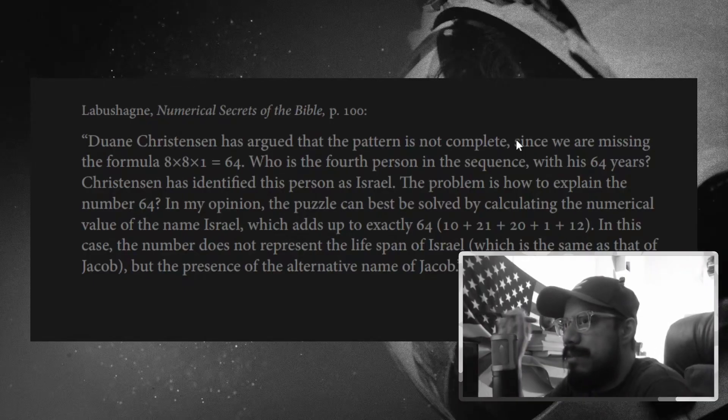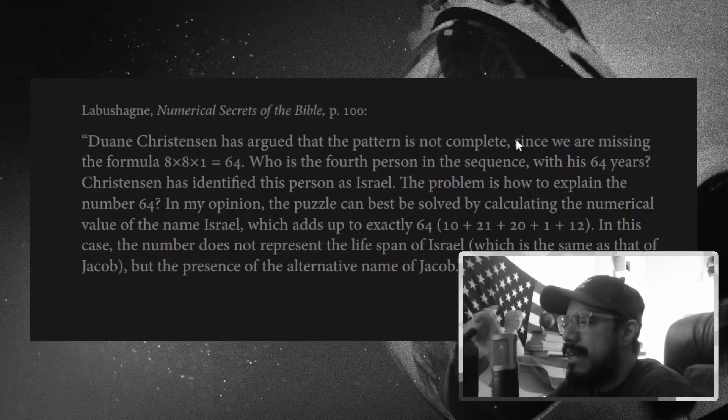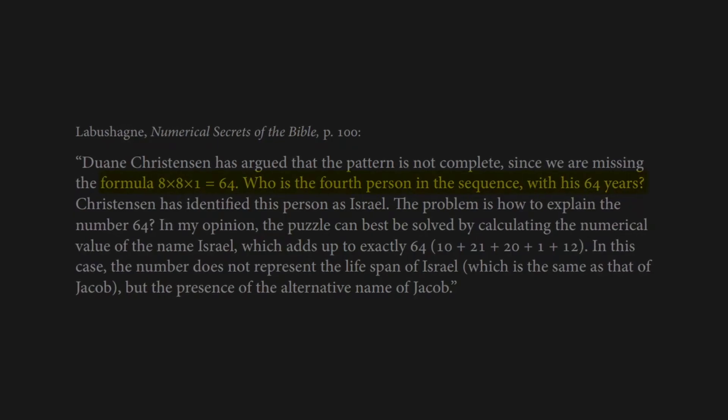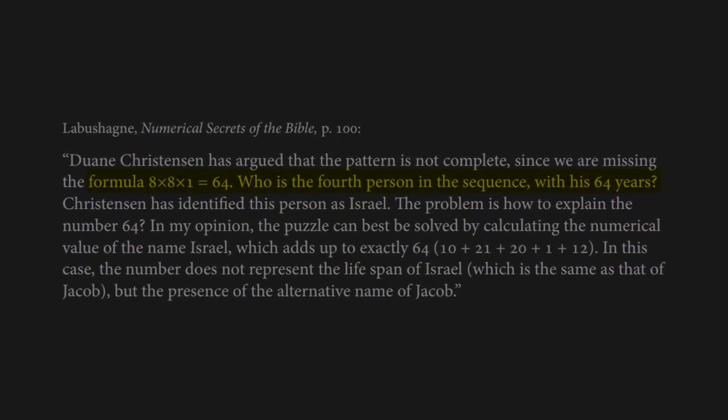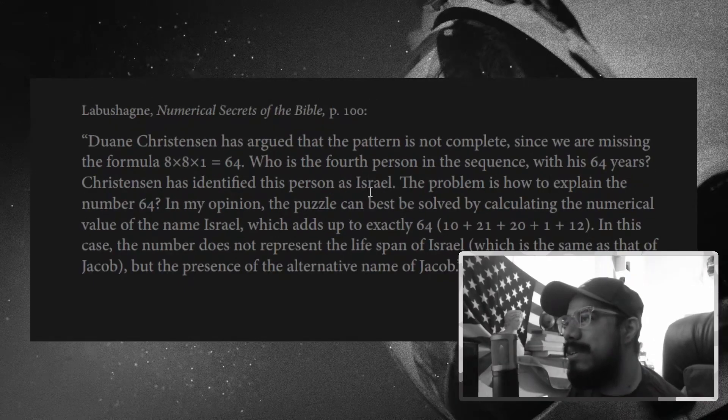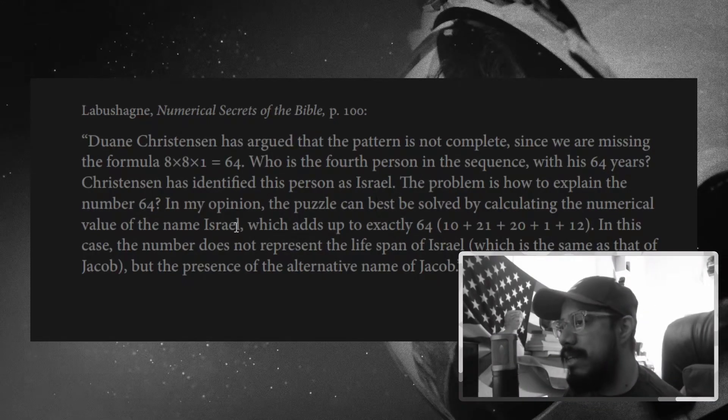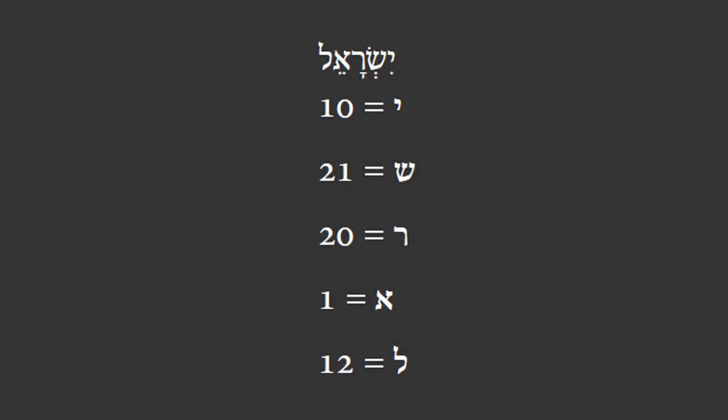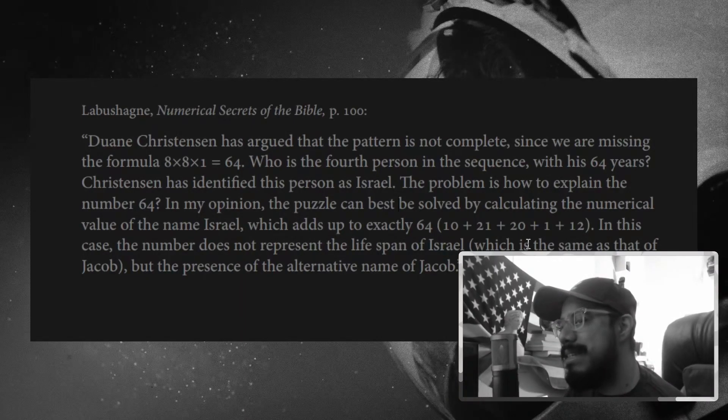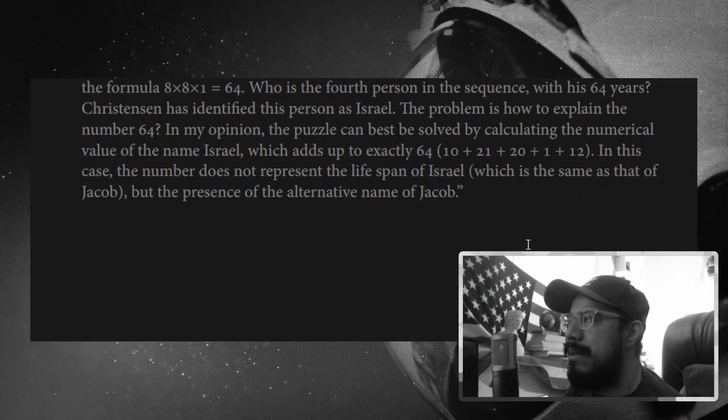From here, I wanted to pick up back with Labashane's book, because here he's interacting with Duane Christensen, who was one of the few scholars that was actually aware of this kind of stuff and would interact with it. And he felt that the pattern was incomplete because it was missing the formula 8 times 8 times 1, 8 squared times 1. So who's the fourth person in the sequence with 64 years. So we need 64 somewhere in here. And he identified that person as Israel. You can get to Israel one of two ways. The gematria for Israel is 64. So he thinks that is ultimately a reference to Israel. In this case, the number does not represent the lifespan of Israel, which is the same as that of Jacob because they're the same person, but the presence of the alternative name of Jacob. He thinks it's gematria for the name.